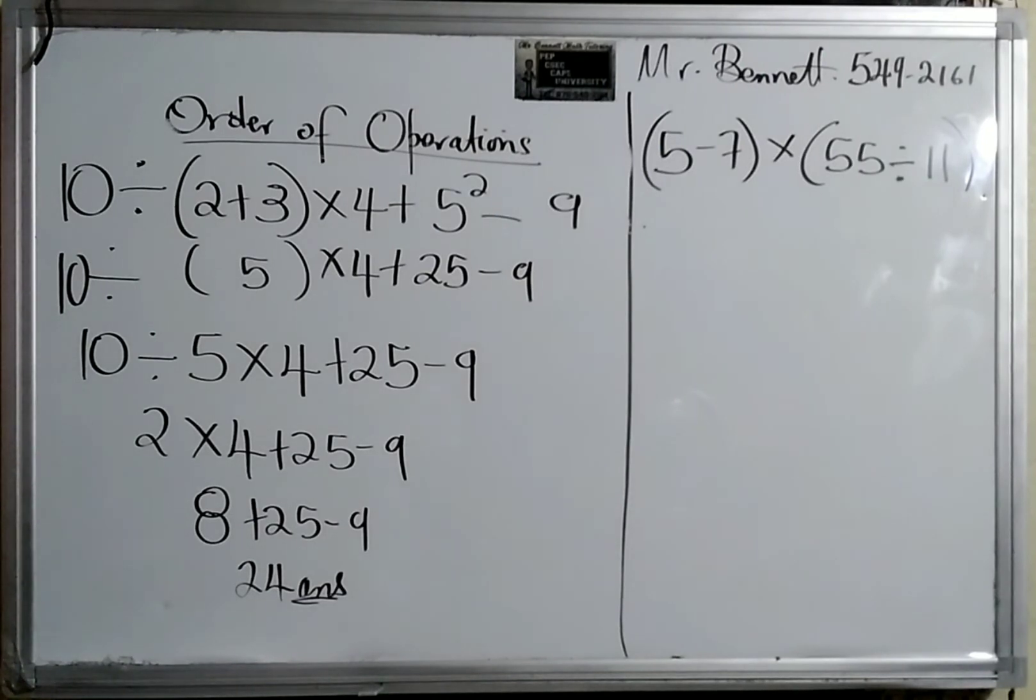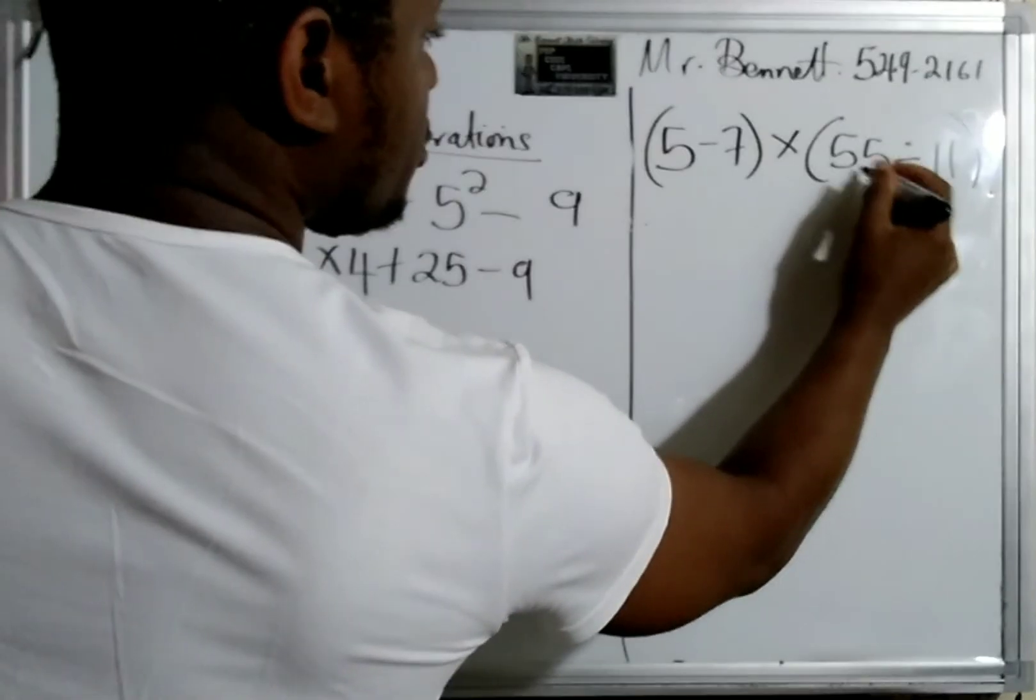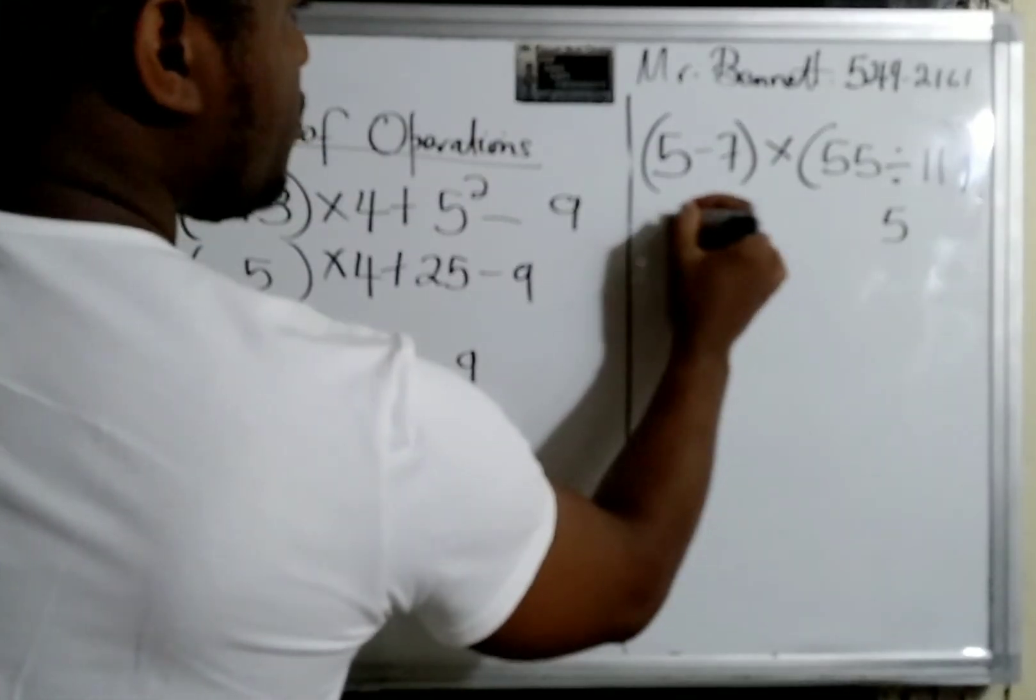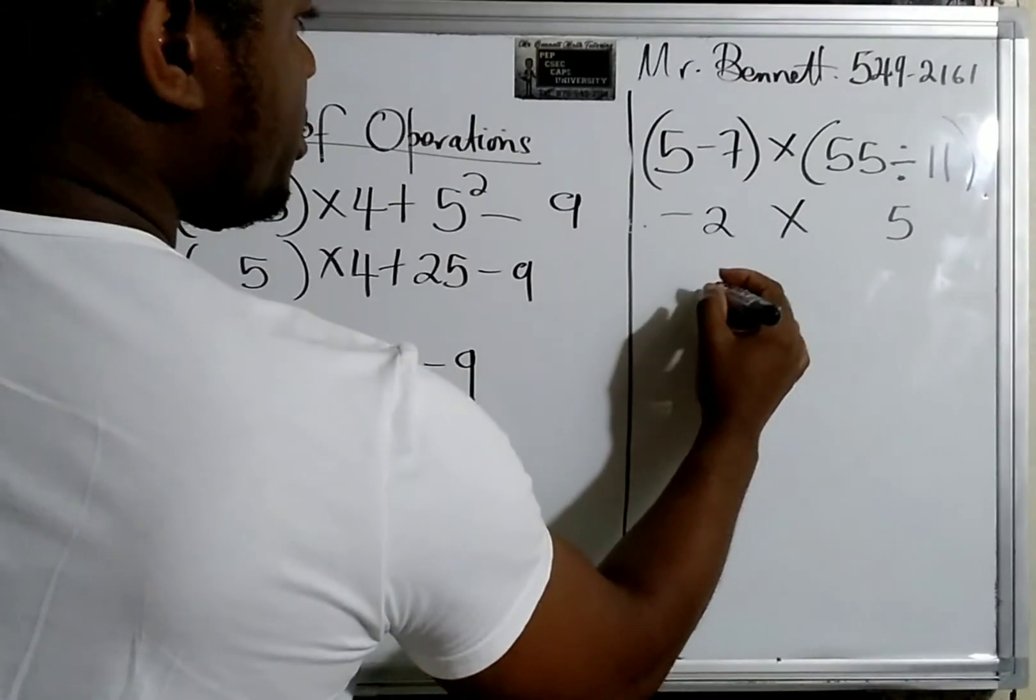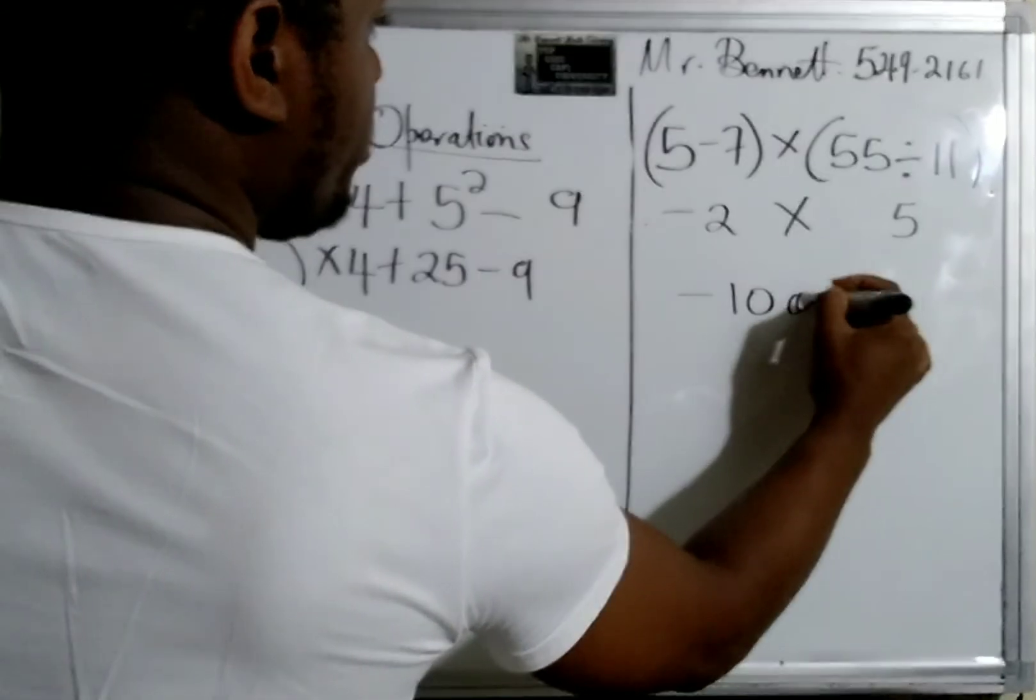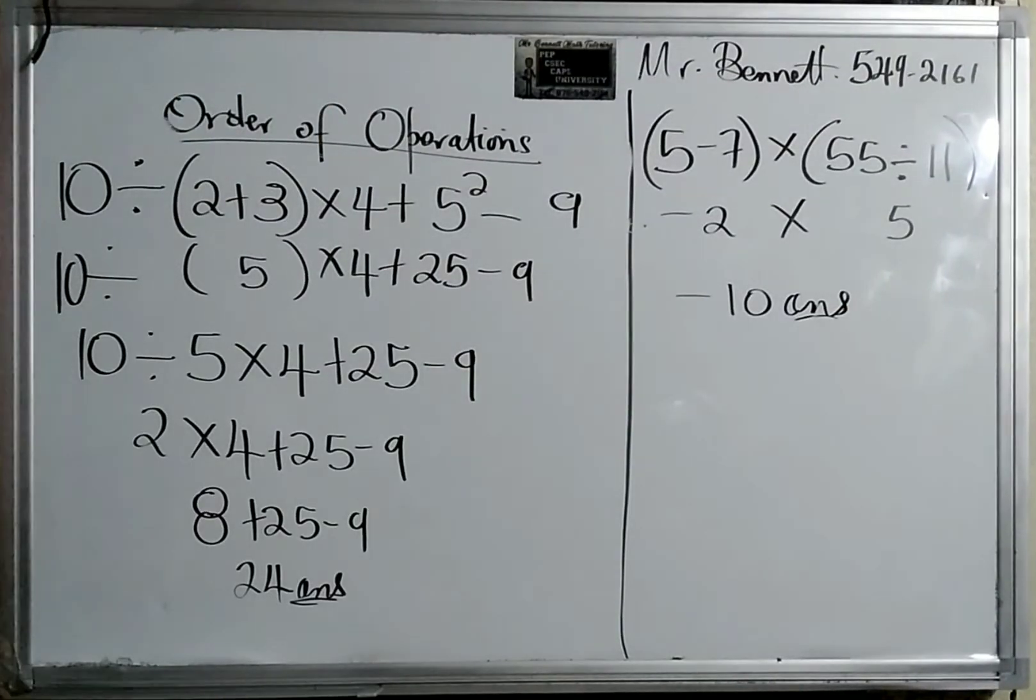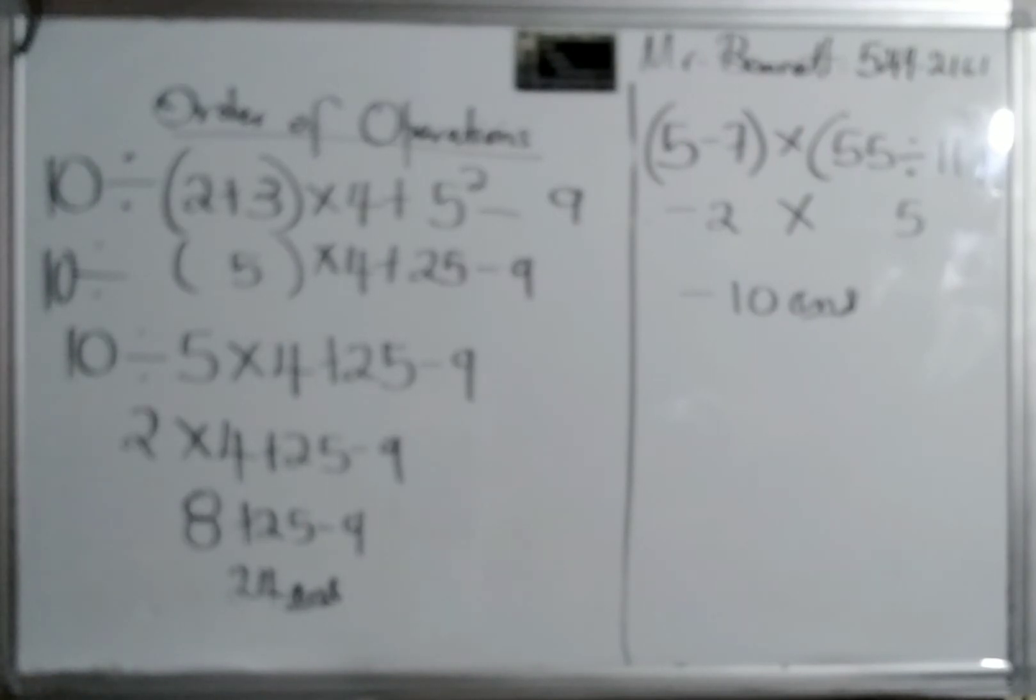All right guys, let us look at this one. We have 5-(7)×(5÷5). Now we must write the bracket first, so this is very easy. This gives us 5, this will give us -2×5, so that would be negative 2 times 5 would give us negative 10. Remember, a negative times a positive gives us negative always. Thanks for watching guys, remember to like, subscribe, share with your friends.